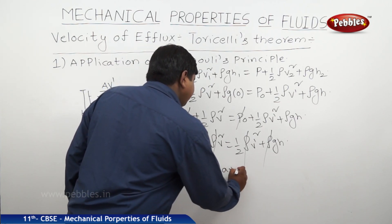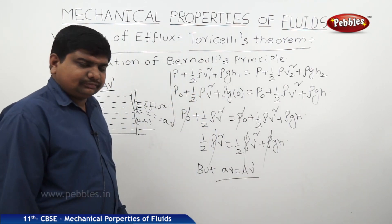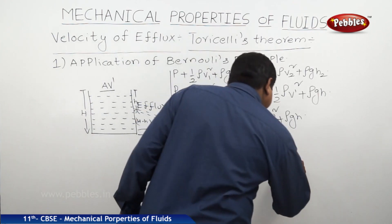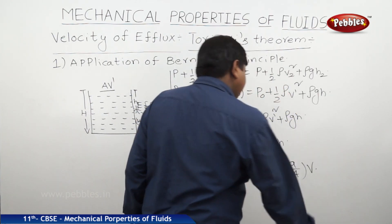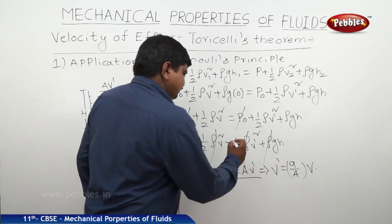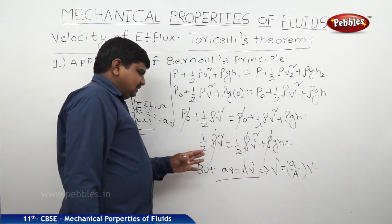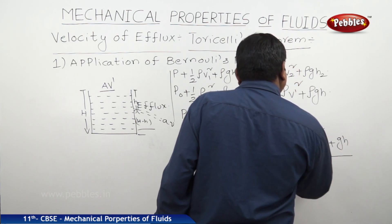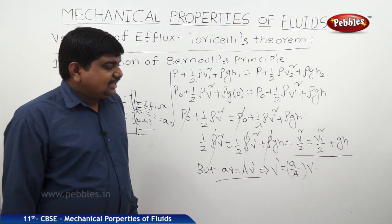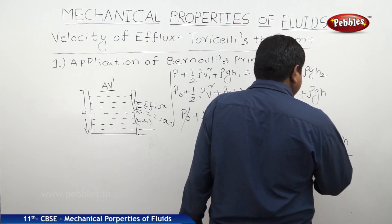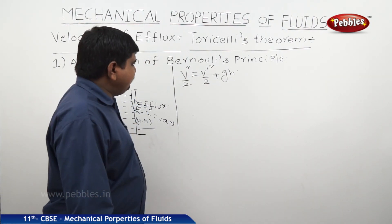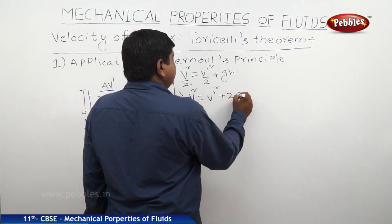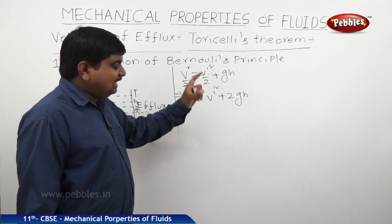After cancelling rho throughout, we get: v²/2 = V-dash²/2 + gh, which simplifies to v² = V-dash² + 2gh. Now we substitute the expression for V-dash from the equation of continuity: V-dash = (a/A) × v.